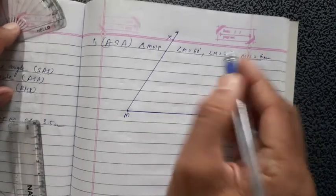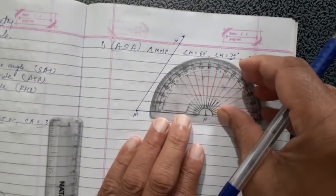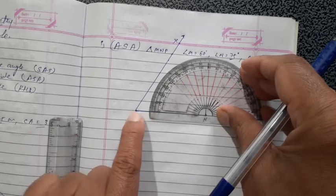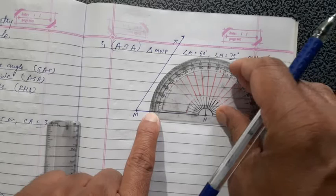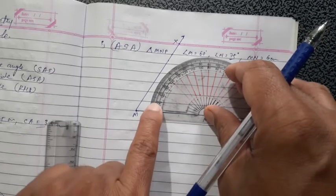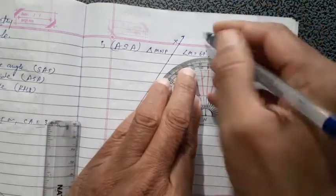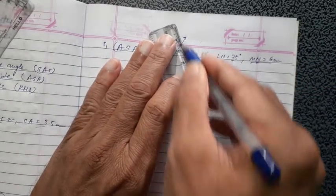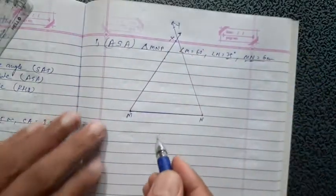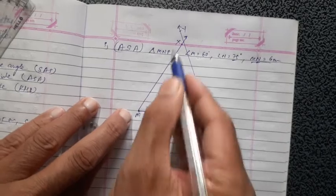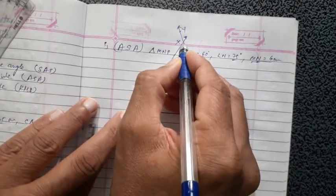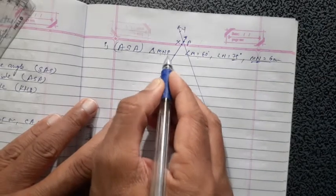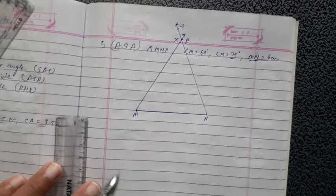Now angle N = 75 degrees. Put the protractor on point N. NM is in this direction, so read the upper side numbers: 0, 10, 20, 30, 40, 50, 60, 70 — and here 75. Draw an arc like that. Now check where ray MX and ray NY intersect — it is here. That is your third point P. Already M and N are there, so the third one is P. Triangle MNP is your required triangle.